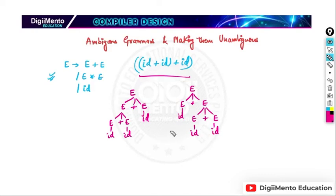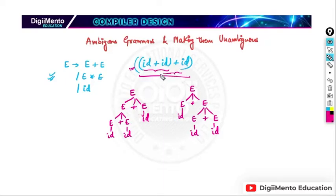We are getting more than one parse tree for the single expression. But which one is correct? If we see carefully, in this expression, first we are calculating the leftmost plus operator. So as per this expression, this should be the correct parse tree. This is calculating the leftmost operator first, then we calculate the next one.